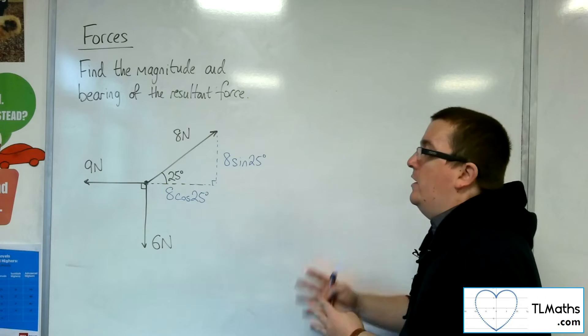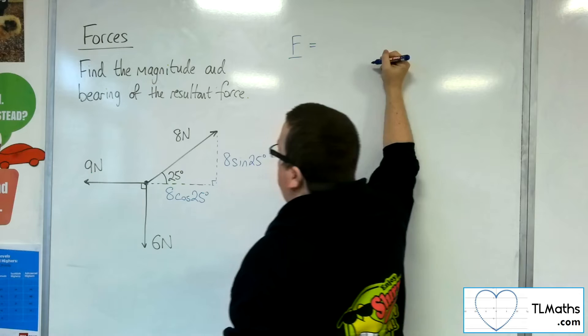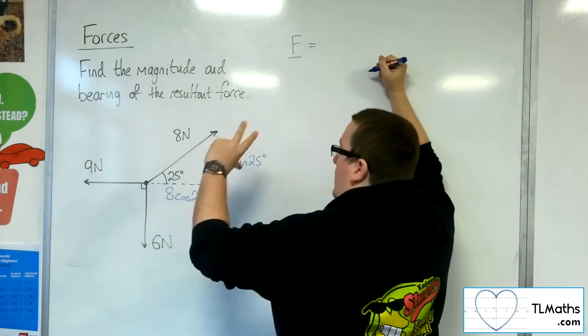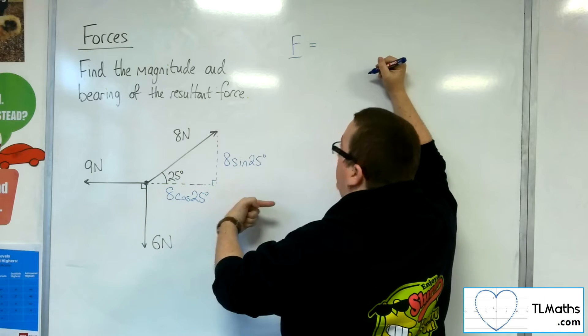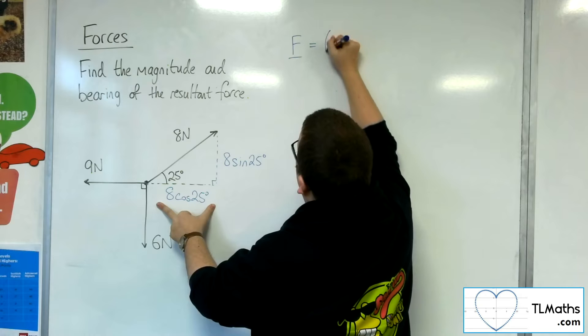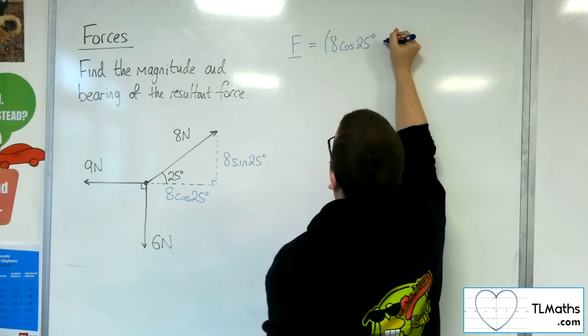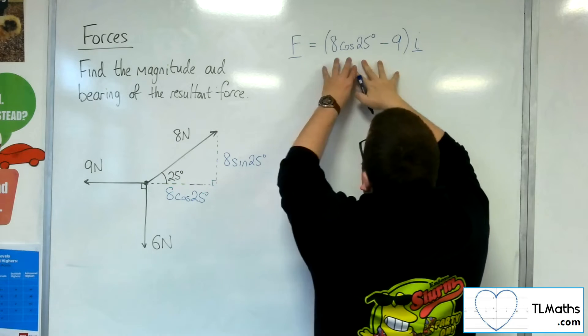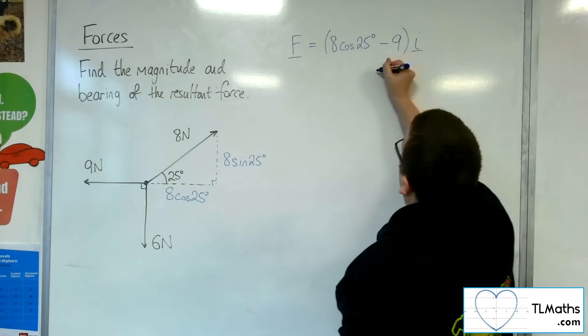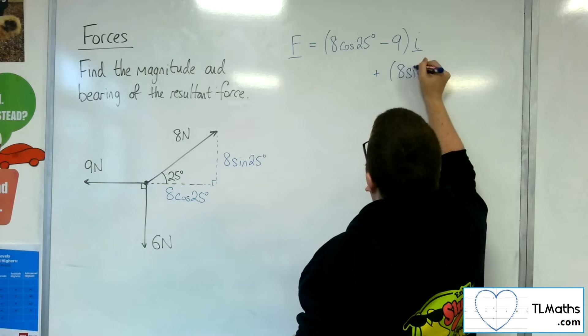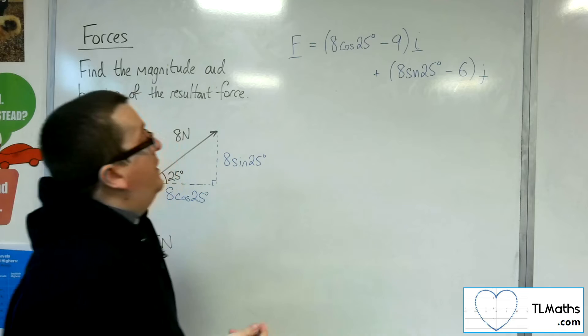So what I can then do is I can write all of these forces down. So the force itself, let's say, call it F. Well, we've got the components of this force. So if I write them down, well, let's do it all as horizontal and vertical. That would probably be easier. So if I take to the right as positive, we have 8 cos 25, and we've got 9 newtons working to the left, and so that would be negative 9, and that is what's going on for the horizontal for this force. The vertical, if I take up as positive, so I've got the 8 sine 25 working upwards, and I've got the 6 newtons working downwards. And so this is my force.